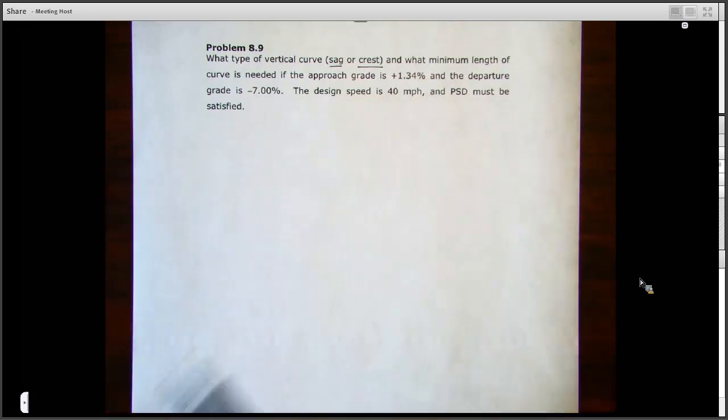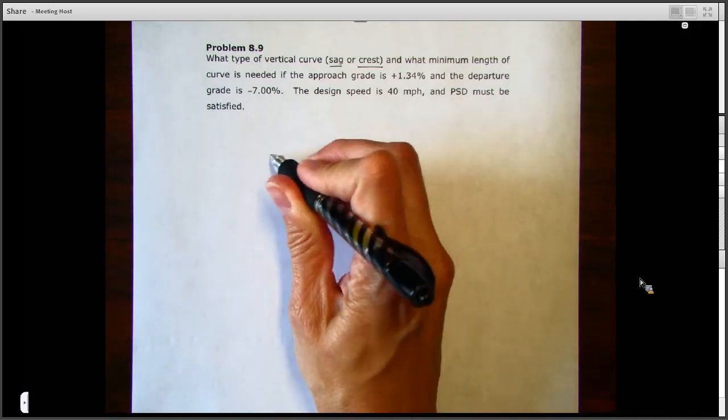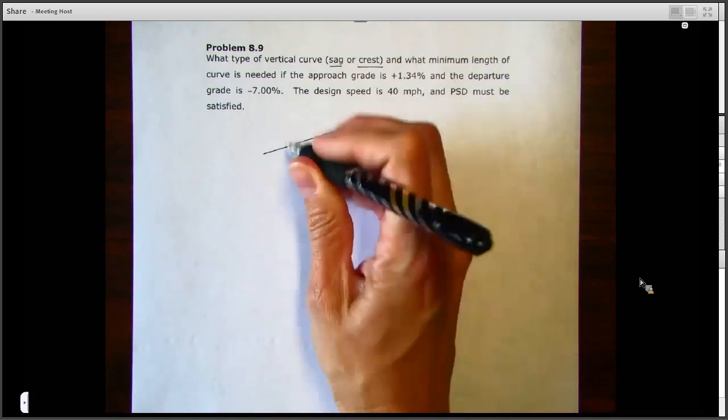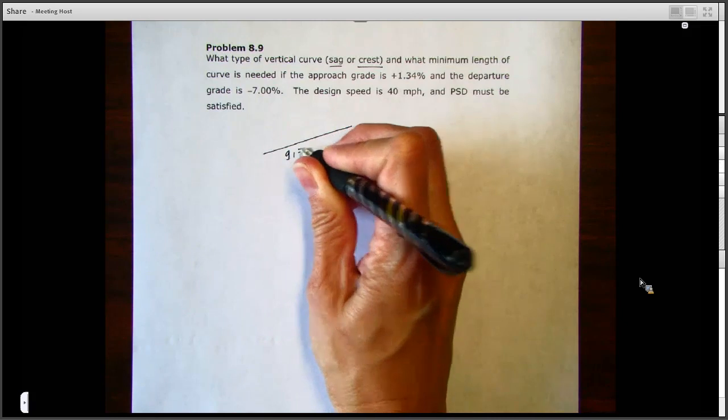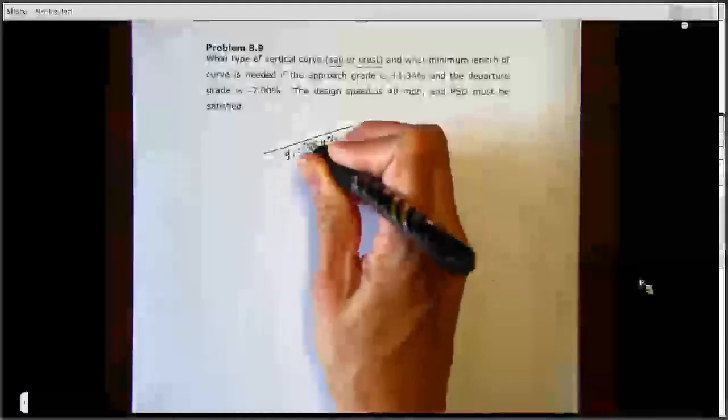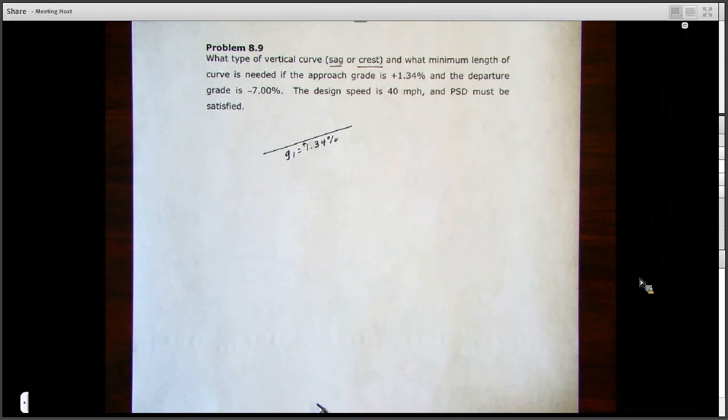So the first thing I would do here would be to sketch in the curve to determine if it's sag or crest. Since we have a positive approach grade going in, our G1 is 1.34 percent and that's positive, so that's going up.